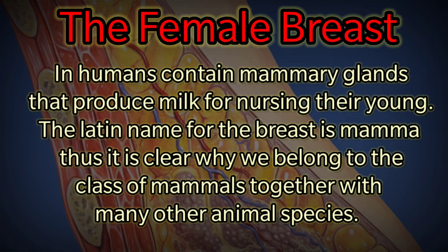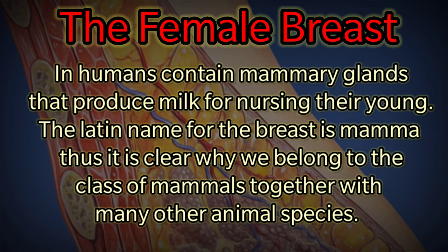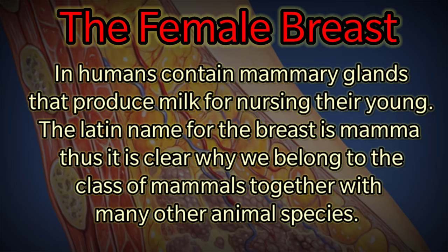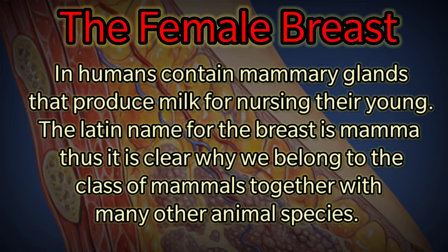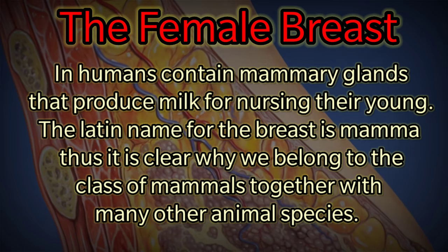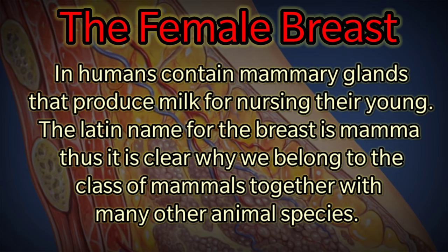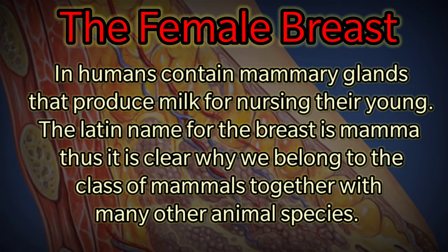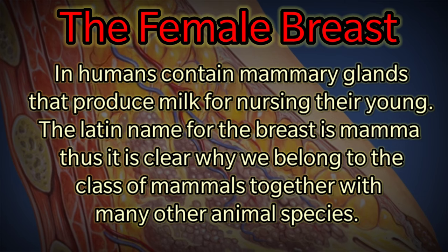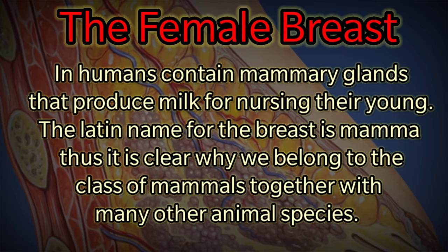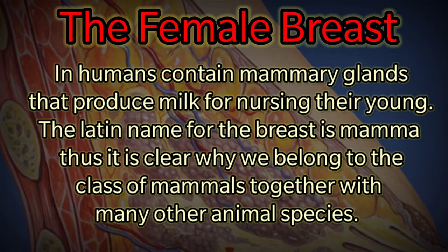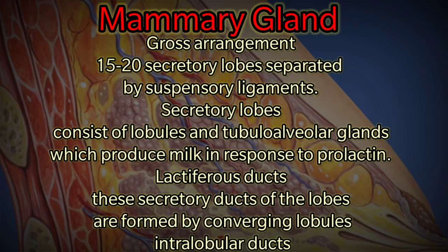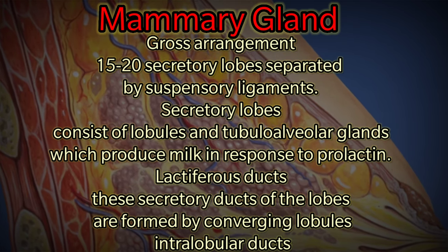The female breast in humans contains mammary glands that produce milk for nursing their young. The Latin name for the breast is mamma, which is why we belong to the class of mammals, together with many other animal species. Female breast mammary gland: gross arrangement.